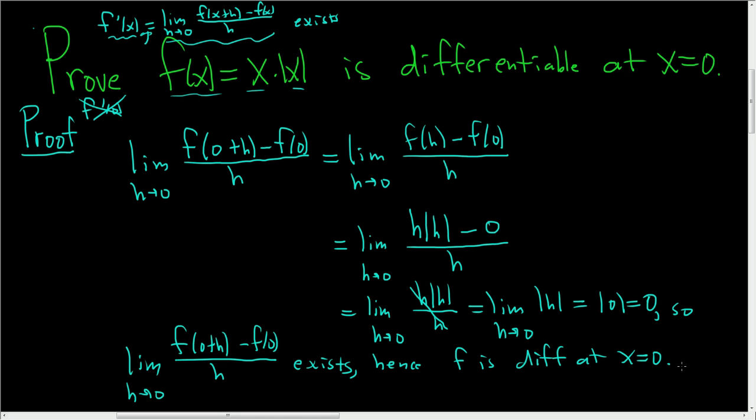Moreover, we know the derivative. The derivative is equal to this limit, so f'(0) is simply the value we received, which is 0. So I hope that made sense.